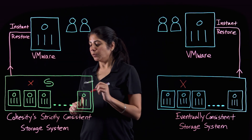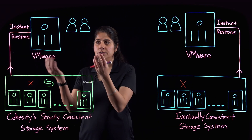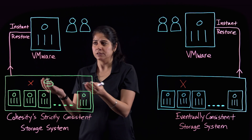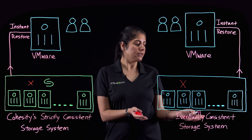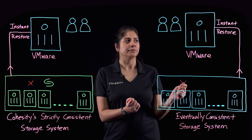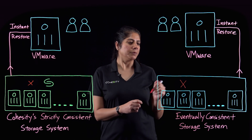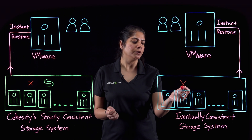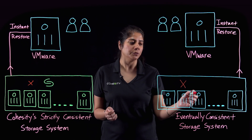on Cohesity's strictly consistent storage system, the user's data is still safe because there is yet another copy of the data on some other host. But within an eventually consistent storage system, the user has lost his data — because if the only copy was on the node that failed and it wasn't yet synced to another host,